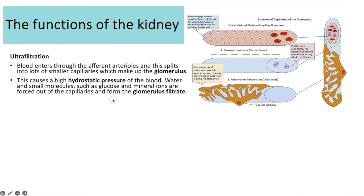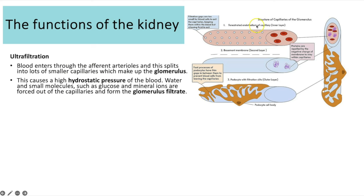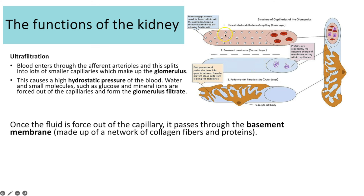Going through ultrafiltration in more detail: blood enters the glomerular network of capillaries within the Bowman's capsule through the afferent arterioles, which split into lots of smaller capillaries with a narrower lumen, resulting in high hydrostatic pressure. That hydrostatic pressure forces out water and small molecules such as glucose, mineral ions and urea to form the glomerular filtrate. Capillaries are only one cell thick, so large molecules like red blood cells and large proteins cannot be forced out, but small molecules can fit through the gaps.